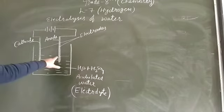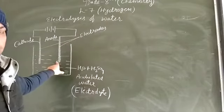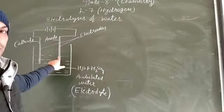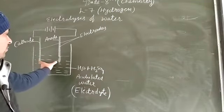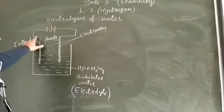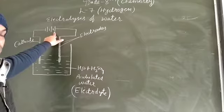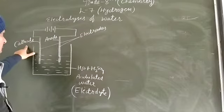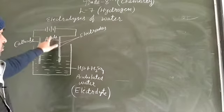Now you will see here two electrodes — two metal rods. The metal may be copper, zinc, or any other metal. Whatever metal we take, we call them electrodes. One electrode is connected to the negative terminal of the battery and one electrode is connected to the positive terminal of the battery. The electrode connected to the negative terminal is known as the cathode, and the electrode connected to the positive terminal is known as the anode.